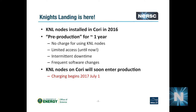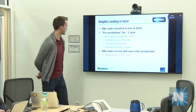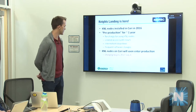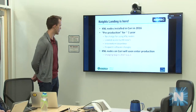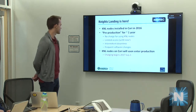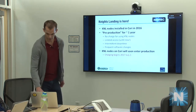The KNL nodes were installed in Cori towards the later end of last year and have been in a pre-production phase since then — not quite a year. That phase consisted of no charge for users enabled on those nodes, with relatively limited access until recently; all NERSC users should now be able to use the KNL nodes. There was some intermittent downtime for hardware stability and software upgrades. When it enters production, we will start charging — I believe it's 96 NERSC hours per KNL node hour, which is a little more than the Haswell nodes.